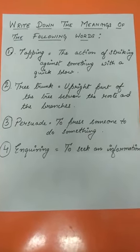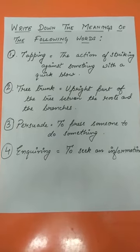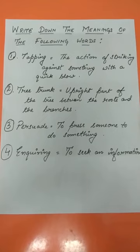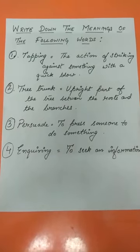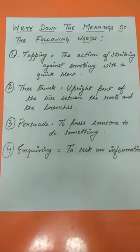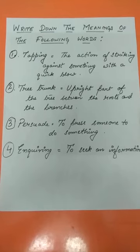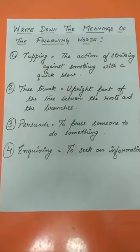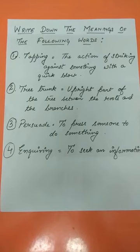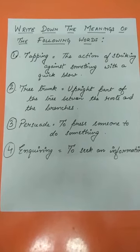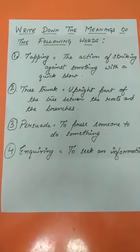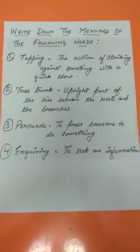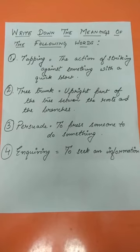Write down the meanings of the following words. 1. Tapping — the action of striking against something with a quick blow. 2. Tree trunk — the upright part of the tree between the roots and the branches. 3. Persuade — to press someone to do something. 4. Inquiring — to seek information.